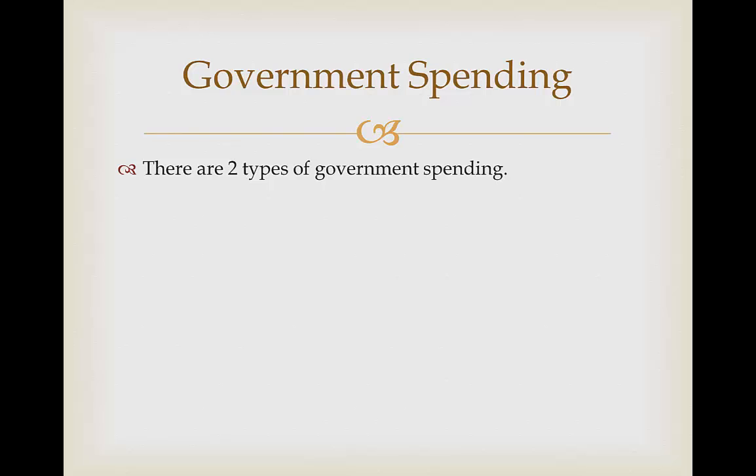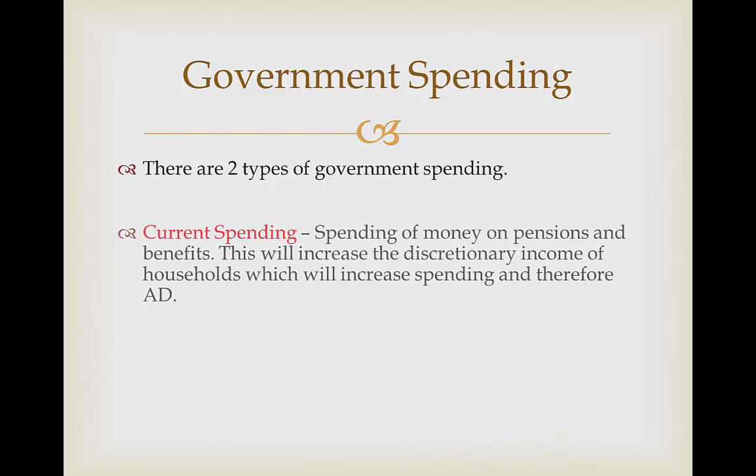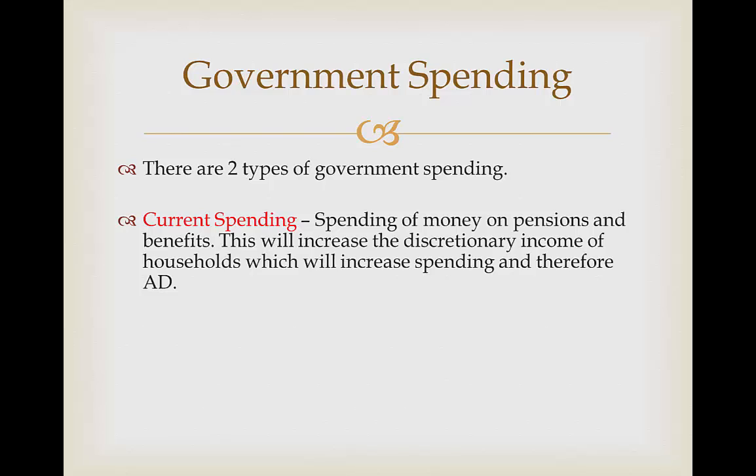There are two types of government spending which we're going to use in order to try and manipulate aggregate demand. The first of which is current spending. This is the spending of money on pensions and benefits in the economy. This will increase the discretionary income of households, which is going to increase spending levels, and therefore we're going to see a rise in aggregate demand since spending is a component of aggregate demand.